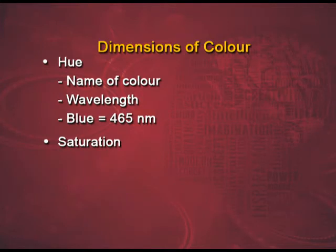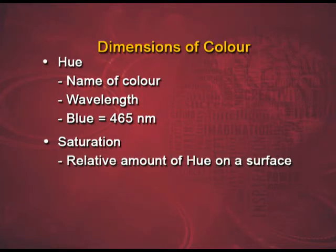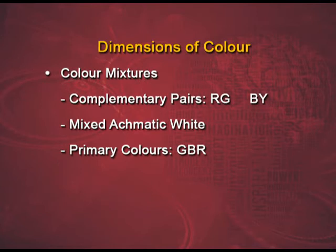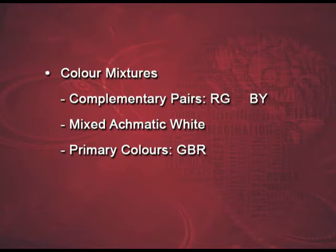Another feature that helps you detect different colors is saturation — the relative amount of hue on a surface, whether it is dark or light. Then there is brightness, which is the perceived intensity of light in a color. There are different color mixtures. We have three primary colors — red, blue, and green. They are called primary colors because they can result in all other colors by being mixed in different proportions. There are also complementary colors, which when mixed together result in achromatic shades like gray or white. Examples of complementary colors are red and green, and blue and yellow. Different proportions of complementary colors result in different achromatic shades.